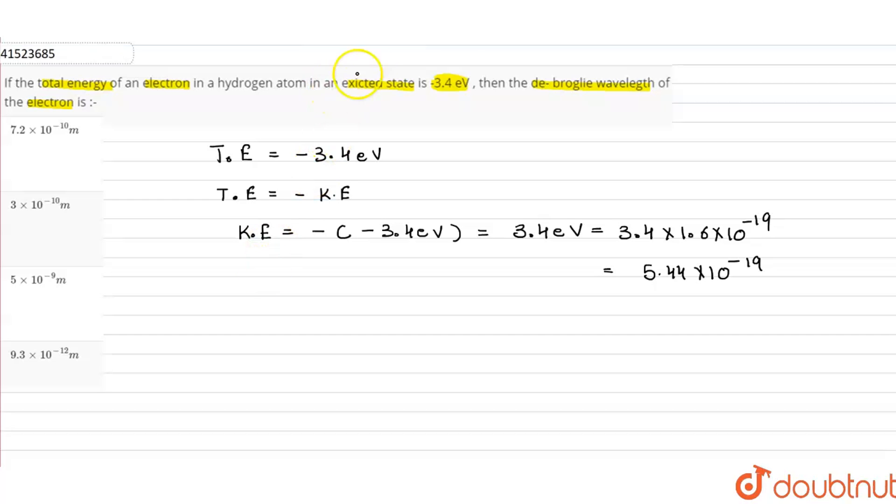Now, we need to write the formula for de Broglie wavelength. Lambda equals h over p, where p is momentum. We can write momentum as p equals square root of 2 times mass times kinetic energy.